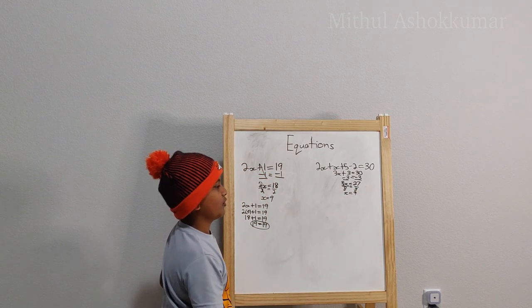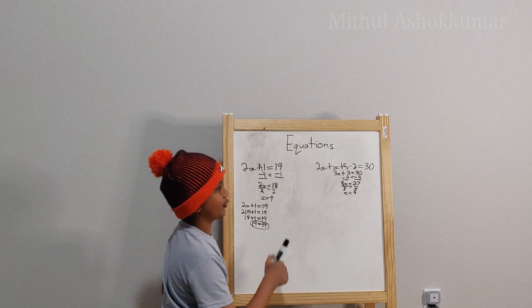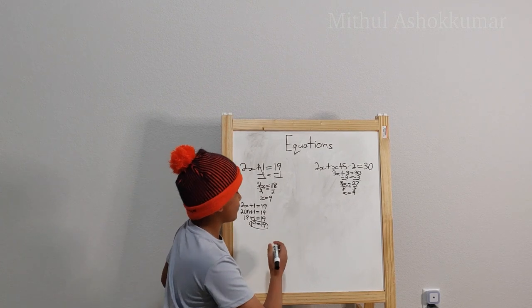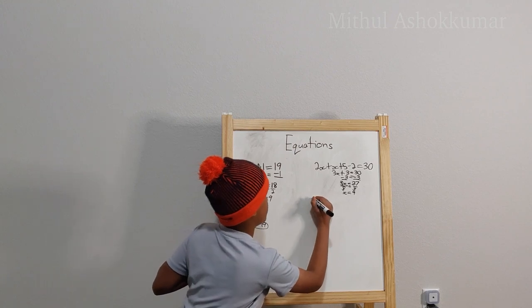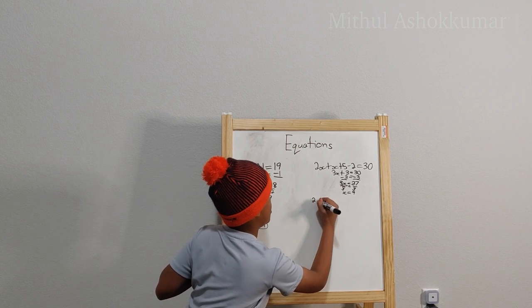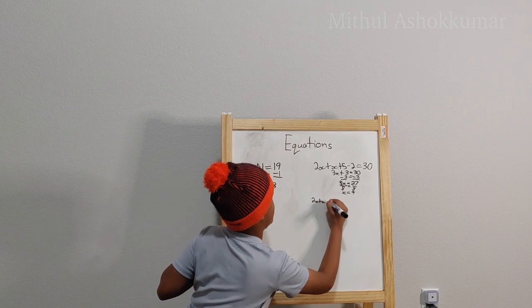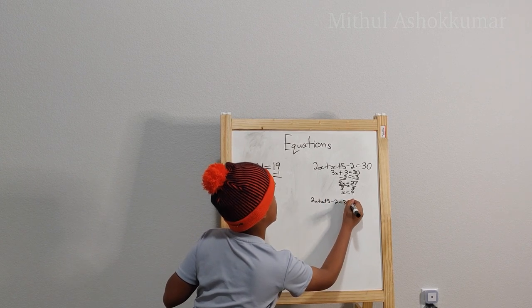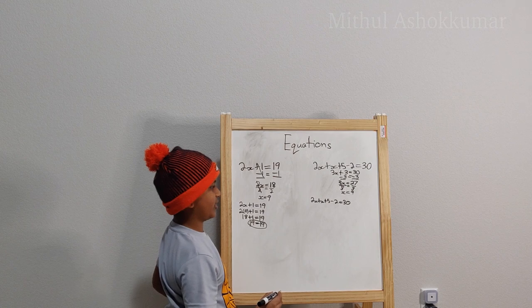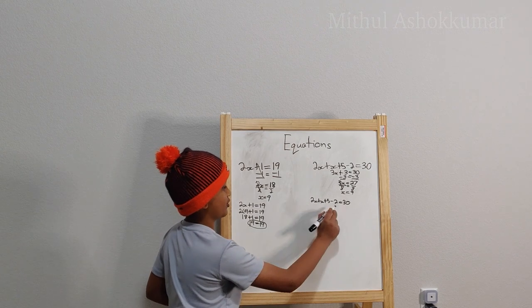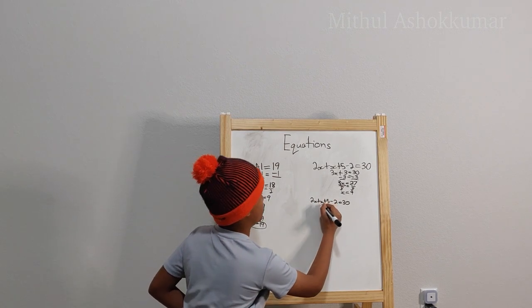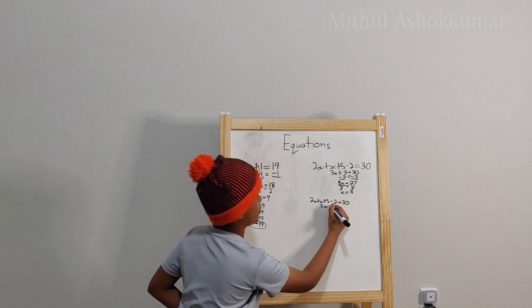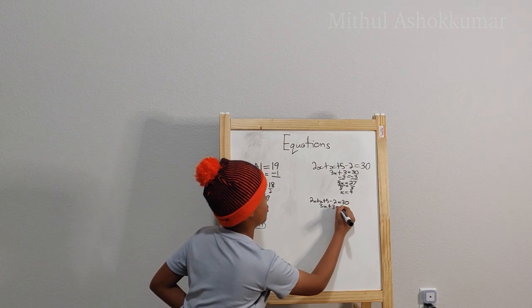Okay, so is this a true value for this equation? Alright, we can just check it. So we'll write the equation again. 2x plus x plus 5 minus 2 equals 30. So we'll just do the 2x plus x which is 3x. 5 minus 2 is 3 which equals 30.